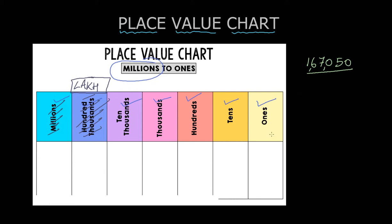We will start from the ones place. In the ones place we have zero. So let me write down zero over here. In the tens place we have five. I will write five over here. In the hundreds place I am again having a zero. So I wrote down zero.